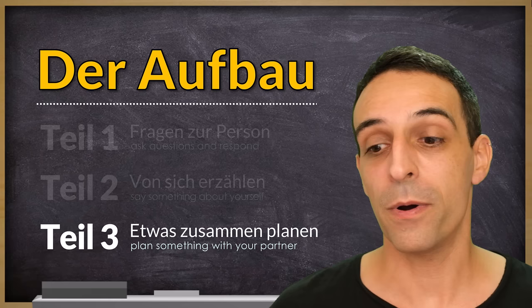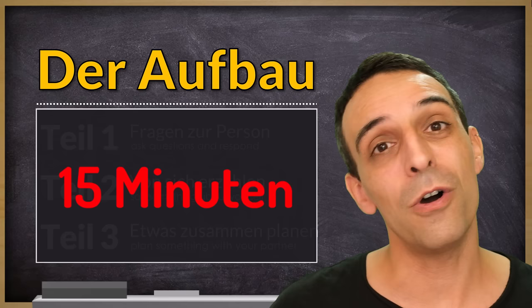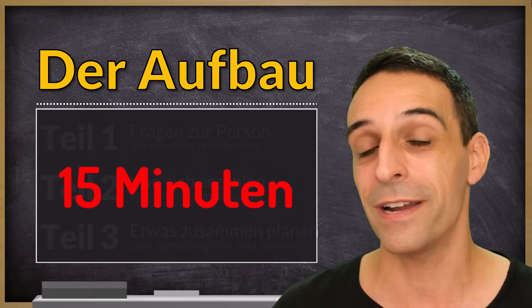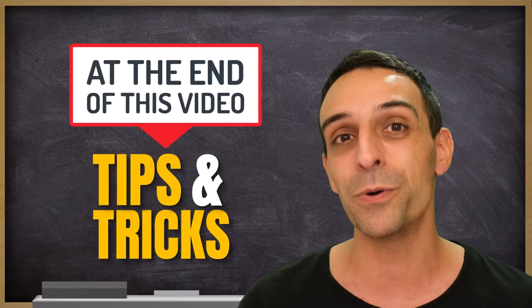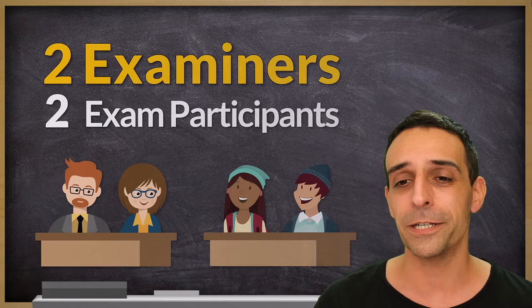Goethe says this whole speaking part takes about 15 minutes, though it's hard to say exactly — it depends on how fast people speak and how long your partner and you think before answering. Before I explain all three parts in detail, let me remind you that this video has a bonus tip which might help you get through the test a bit more easily.